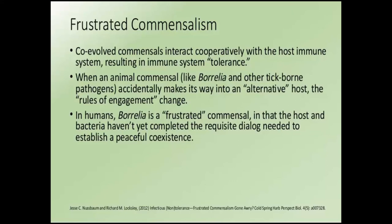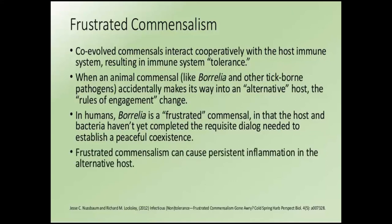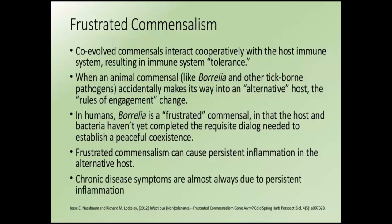Frustrated commensalism in many other types of bacteria is known to result in persistent inflammation. The immune system says, 'I don't really know what else to do, so I'm just going to set the place on fire trying to stop the infection.' Inflammation leads to further inflammation — so it can cause persistent and chronic inflammation in hosts not adapted to the commensal state. It is well established that pretty much all chronic diseases in humans are due to persistent inflammation, including heart disease, diabetes, and multiple sclerosis. The underlying pathology is persistent inflammation.